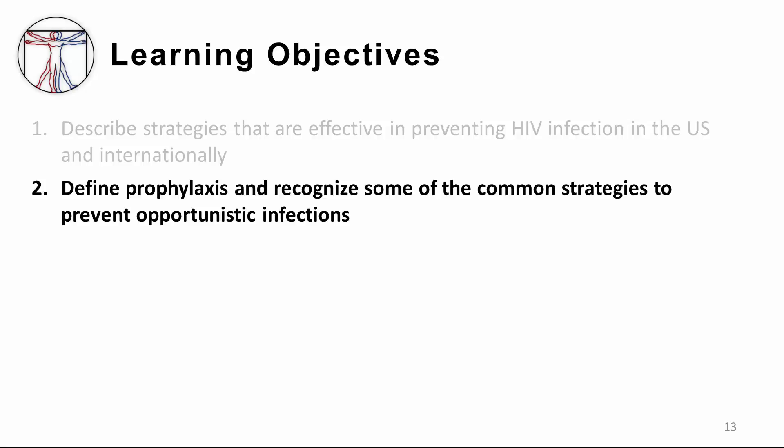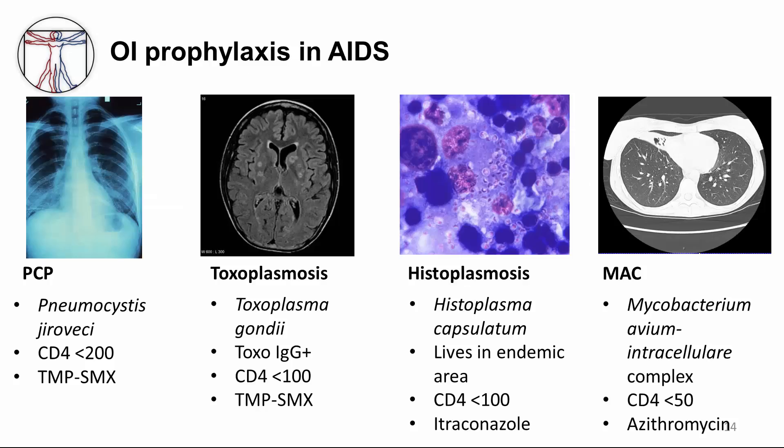Let's close by defining prophylaxis and recognizing some of the common strategies to prevent opportunistic infections. For PCP pneumonia, caused by Pneumocystis jirovecii, we typically include prophylaxis for patients with a CD4 count less than 200, and we use trimethoprim-sulfamethoxazole, or Septra. For toxoplasmosis, caused by Toxoplasma gondii, a parasite, we typically institute prophylaxis if the CD4 count is less than 100 and for those who are serologically positive. Of note, trimethoprim-sulfamethoxazole also covers PCP, so those with CD4 counts under 200 would already be on Septra, giving them automatic toxoplasmosis protection. An alternative agent is needed if they are intolerant of Septra — that's the reason for the recommendation of CD4 count less than 100.